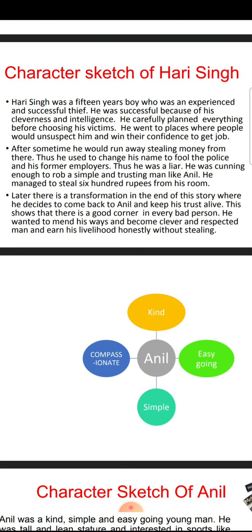He went to places where people would not suspect him and won their confidence to get a job. Hari Singh used to go to such places where people were easily convinced — easily persuaded — by his most appealing smile. Whenever he decided on his man to rob, he used to give a very appealing smile, and people got attracted because of his smile and were ready to give him work. Very easily he became successful in winning their confidence.